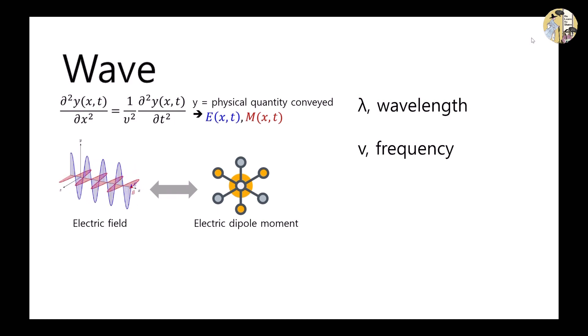Frequency, or nu, is the number of wave cycles passing through a given point per unit time. According to Planck's equation, frequency determines the energy of light.